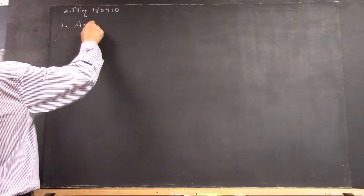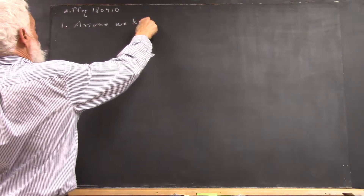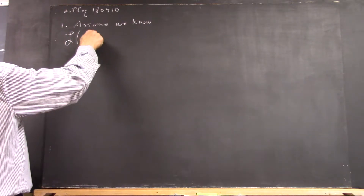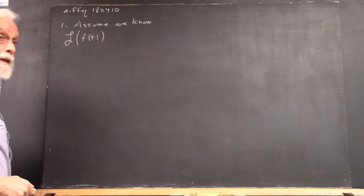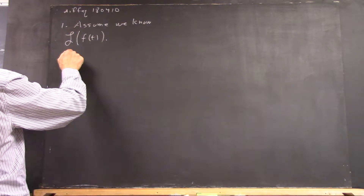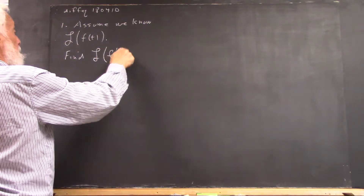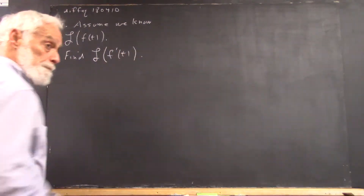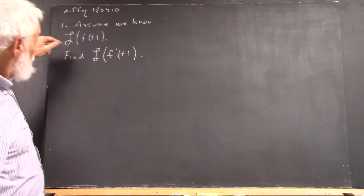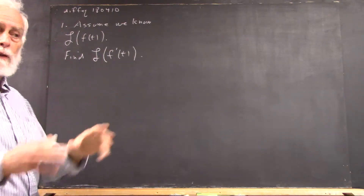We assume we know the Laplace transform of our function f. We want to find the Laplace transform of f prime — in terms of the Laplace transform of f. That's what it means to find the Laplace transform of f prime, which is the way the question was stated.